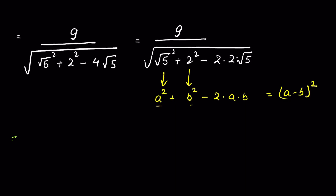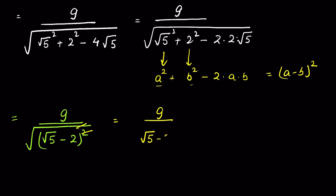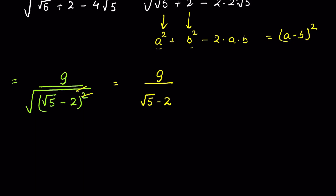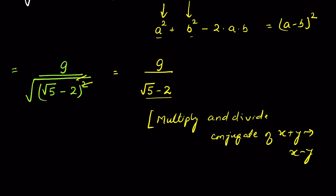So this equals 9 upon √((√5 - 2)²). Now we can remove the square root with the square, so it equals 9 upon (√5 - 2). This is in the denominator so we need to rationalize it. We multiply and divide by the conjugate of (√5 - 2). The conjugate of (x + y) is (x - y), so the conjugate of (√5 - 2) will be (√5 + 2).